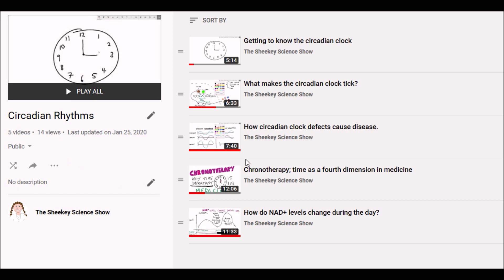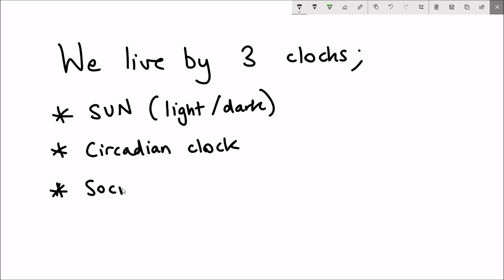But in particular check out how circadian clock defects cause disease because that's most relevant to this video. What we know is that we live by three clocks: the sun and the changes between the light and dark cycles, the circadian clock that I just mentioned, and also our social clock.